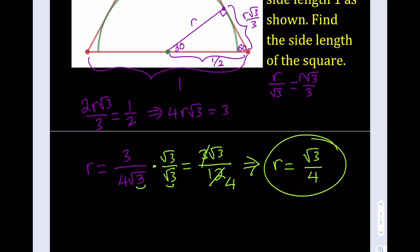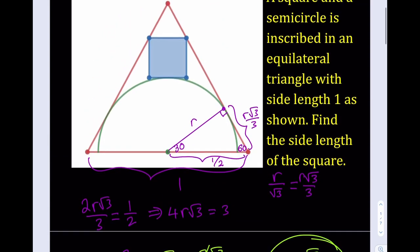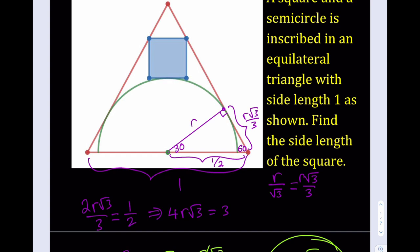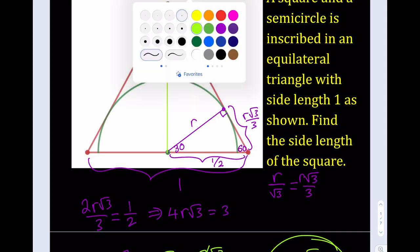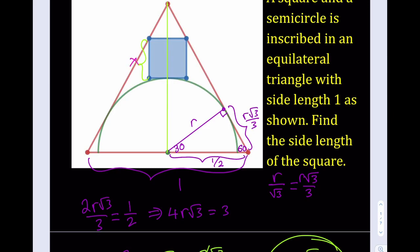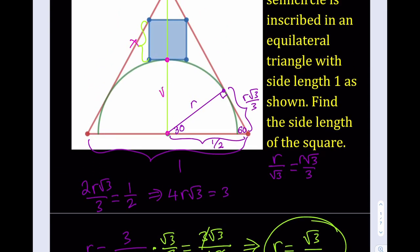At the beginning of the video I said we'd find the radius of the semicircle first, and we did. Now we can use that information to find the side length of the square. I'll make another connection here. I don't know the side length of the square, so let's call it x. The piece from the center to the triangle is R, which equals √3/4. The piece between those two points is the side length of the square, x.